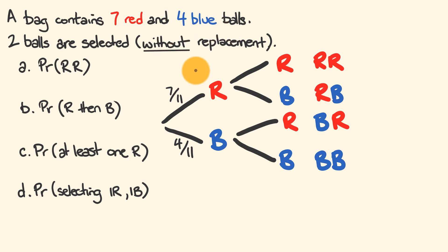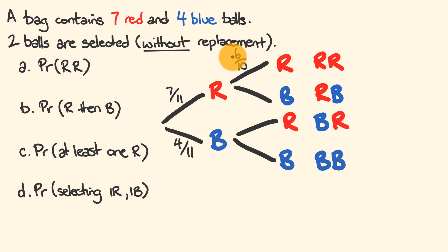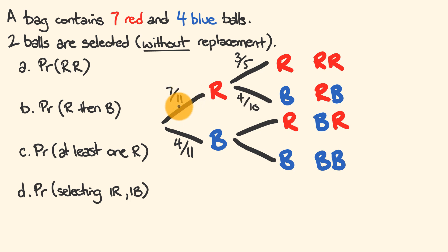For the second pick, we haven't put a ball back so there are only 10 balls left. If we chose red first, we have six reds remaining out of 10 — a 6/10 = 3/5 probability of red second. The probability of blue second in this case is 4/10 = 2/5. Note that 3/5 + 2/5 = 1, accounting for all probability.